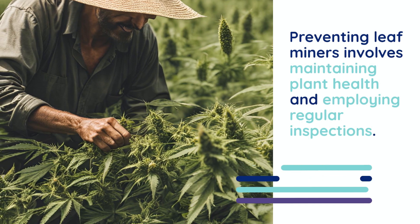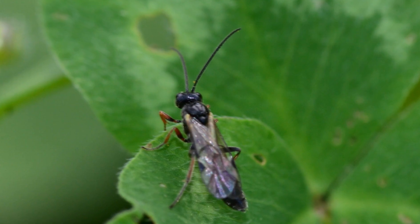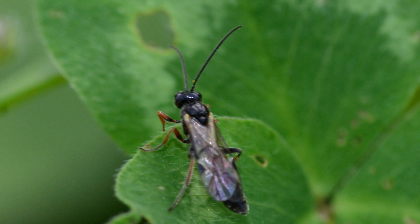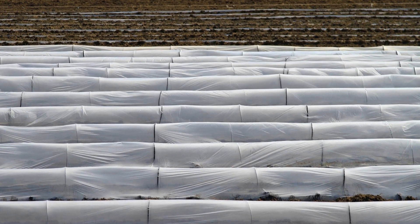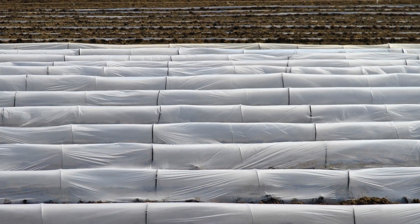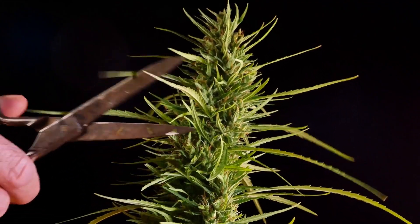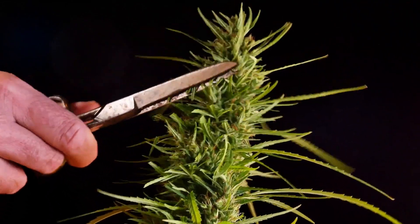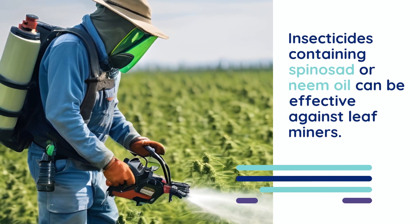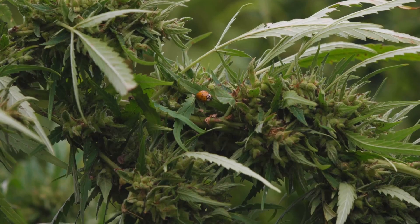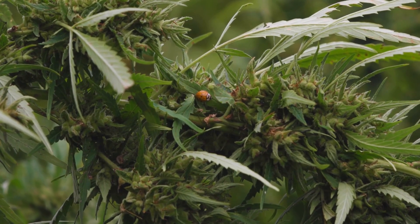Preventing leaf miners involves maintaining plant health and employing regular inspections. Encouraging natural predators such as parasitic wasps can help keep leaf miner populations in check. Additionally, using floating row covers can prevent adult insects from laying eggs on your plants. If an infestation occurs, removing and destroying affected leaves can help reduce the population. Insecticides containing spinosad or neem oil can be effective against leaf miners, and applying these treatments consistently will help manage the problem.